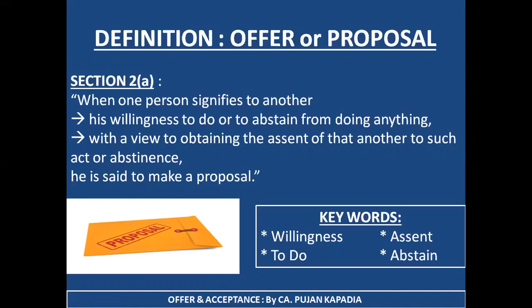In short, what we can make out of this definition: it is defined in Section 2, clause A; the minimum requirement is two parties; one person is showing his willingness to another person — either to do something or to abstain from doing something; and his main motive is to get the assent, the confirmation, from the other person. If this is the case, it is said to be an offer or proposal. The keywords to remember are: willingness, assent, to do, and abstain.